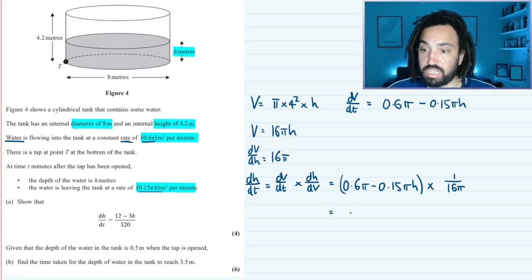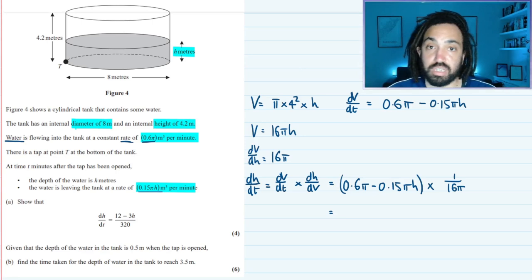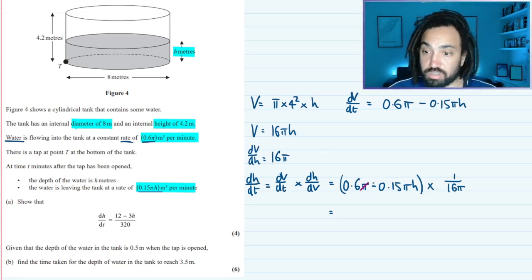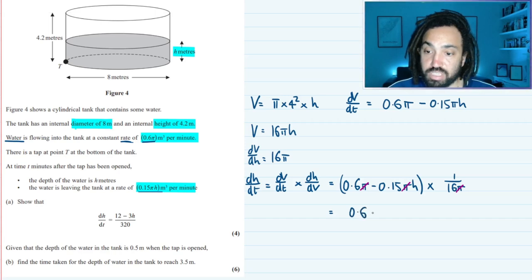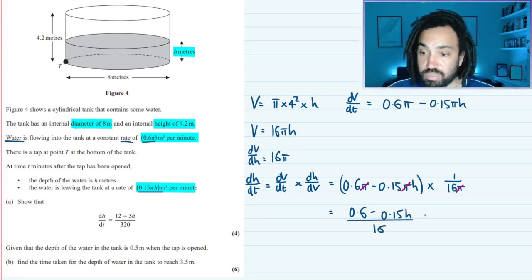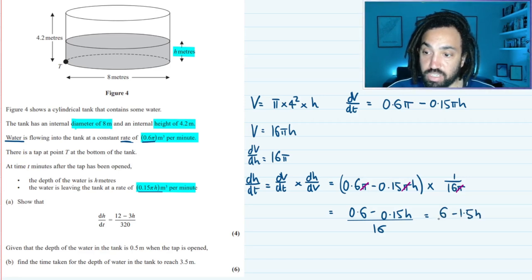Okay so let's cancel out the π here because all the terms in this bracket have a π and we're dividing by a π as well. So we're going to have (0.6 - 0.15h) over 16 and we can times this by 10 which will give me (6 - 1.5h) over 160 and then we can times that again by 2 and that will give us (12 - 3h) over 320 which is what we're looking for.